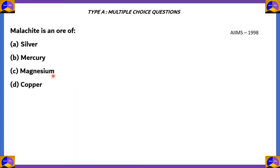Malachite is an ore of: A, silver; B, mercury; C, magnesium; D, copper. To solve this question, let's find out which of these has the ore malachite. Option A, silver, has the ore argentite — it is produced from the ore argentite. So option A is incorrect.